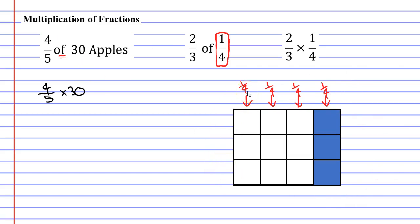Let's now look at the other fraction. We're trying to find two-thirds of a quarter. Now, if you look at each row, there are three rows, meaning that each row must represent one-third.